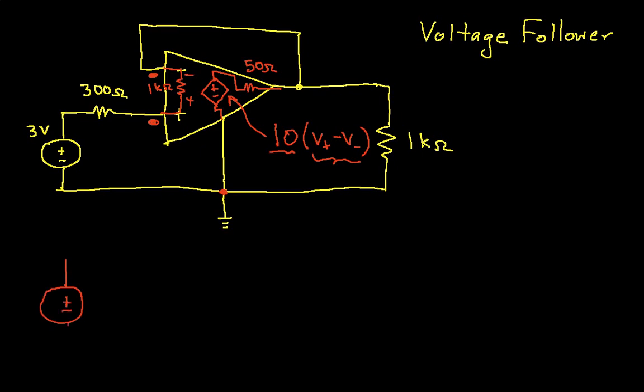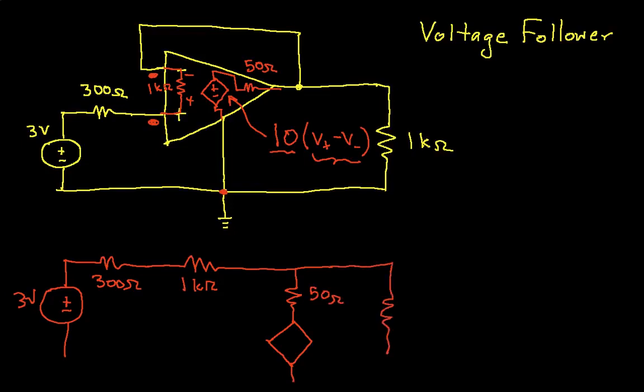We'll keep our 3 volt source. We still have the 300 ohm resistor, and now we'll draw the 1k ohm internal resistance. This is still 300 ohms, and this will get connected at some point to the output of our voltage source, our dependent source. So this is 50 ohms, and this is 1k ohms.